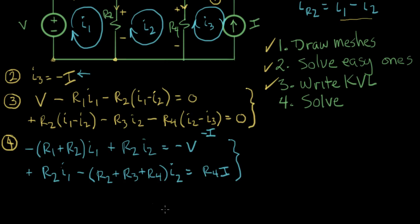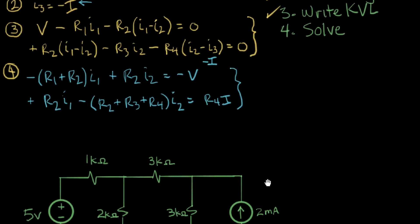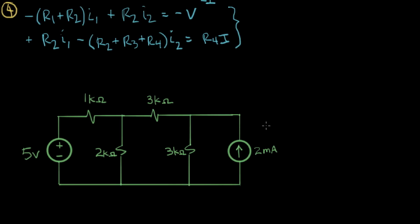I'm going to switch over to a specific circuit with real values instead of symbols. I've filled in: five volts on the voltage source, R1 equals one kilohm, R2 equals two kilohms, R3 equals three kilohms, R4 equals three kilohms, and the current source is two milliamps. I'll write these values under the equations: one K, two K, two K — that's five volts for the first equation; and two K, two K, three K, three K, and I equals two milliamps for the second.